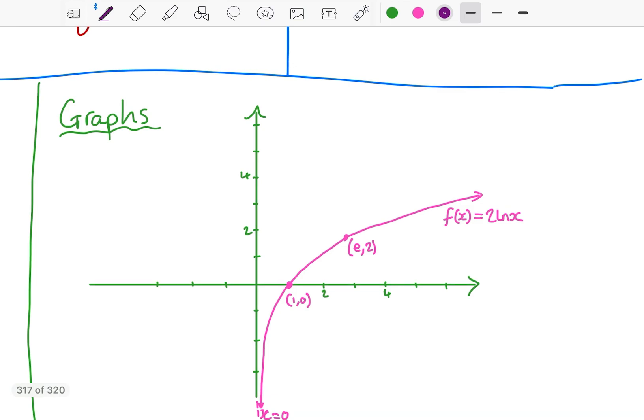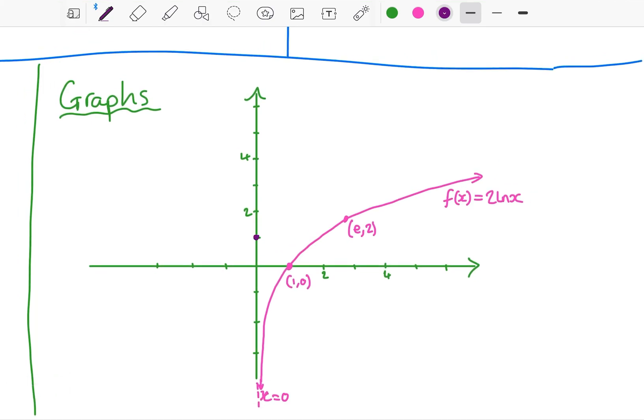Now I may know how to graph e to the power of x over two, but I could also use my knowledge of how inverse functions work. This x-intercept becomes a y-intercept. E comma two becomes two comma e. And the vertical asymptote even becomes a horizontal asymptote. And I can graph it. Instead of going off to the right, let's get this one's going to go up. And I've graphed my inverse function.